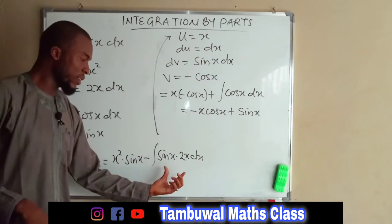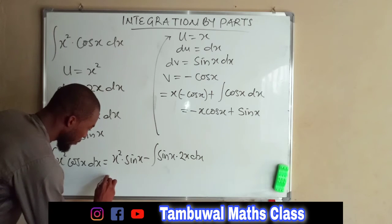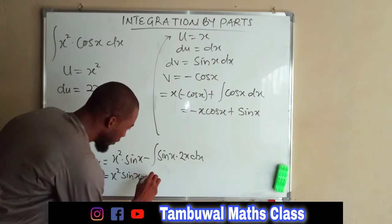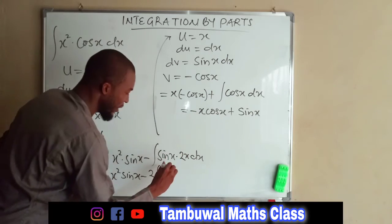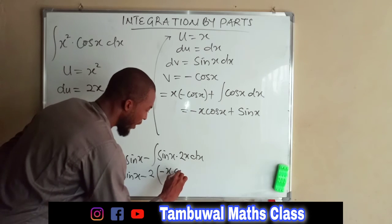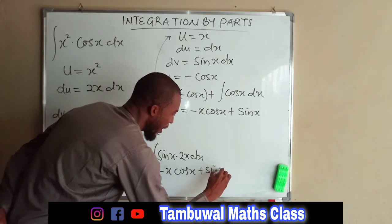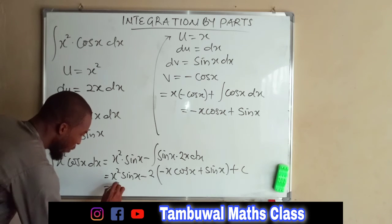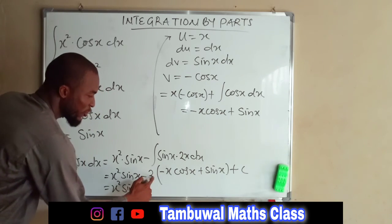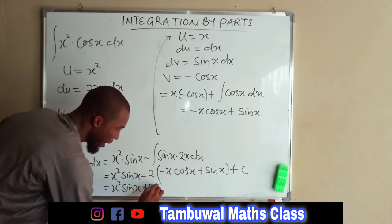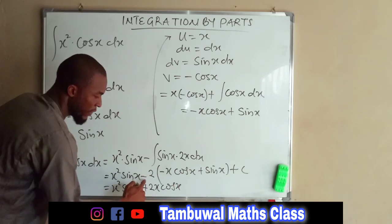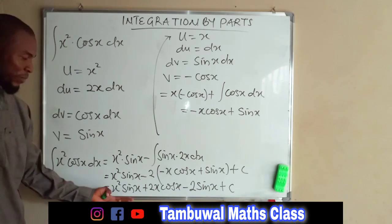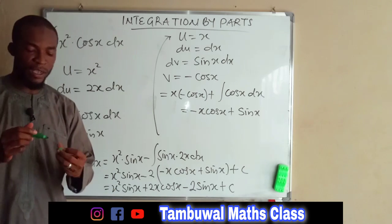Now we substitute this back into the main integral. This becomes X squared sin X minus 2 multiplied by the whole of negative X cos X plus sin X, plus our constant of integration. Expanding: X squared sin X minus 2 times negative X cos X gives positive 2X cos X, and minus 2 sin X, plus the constant of integration C. This is the final answer.